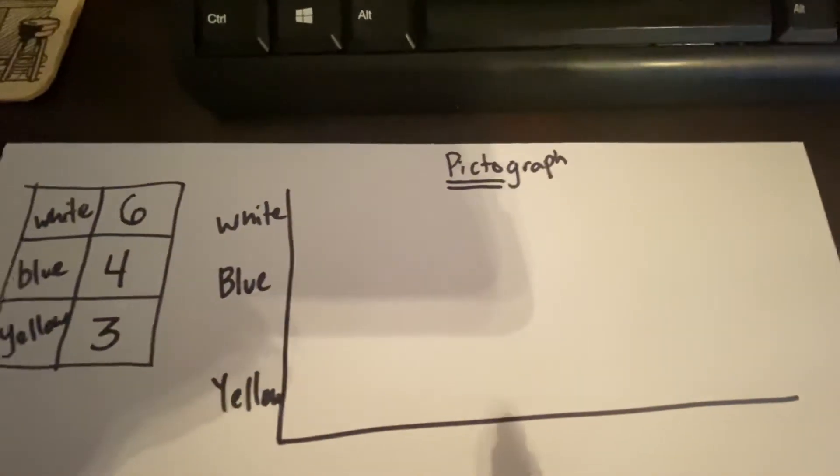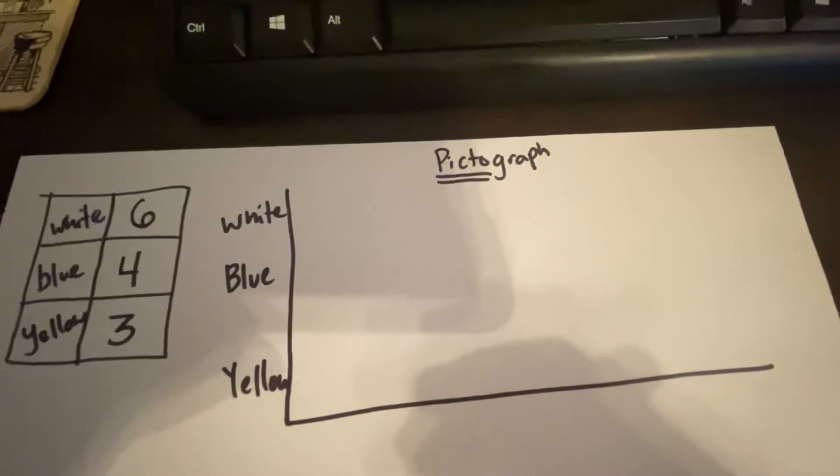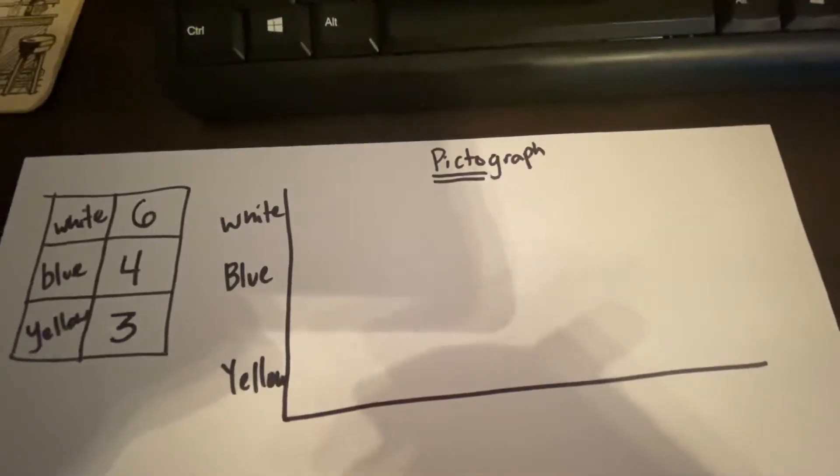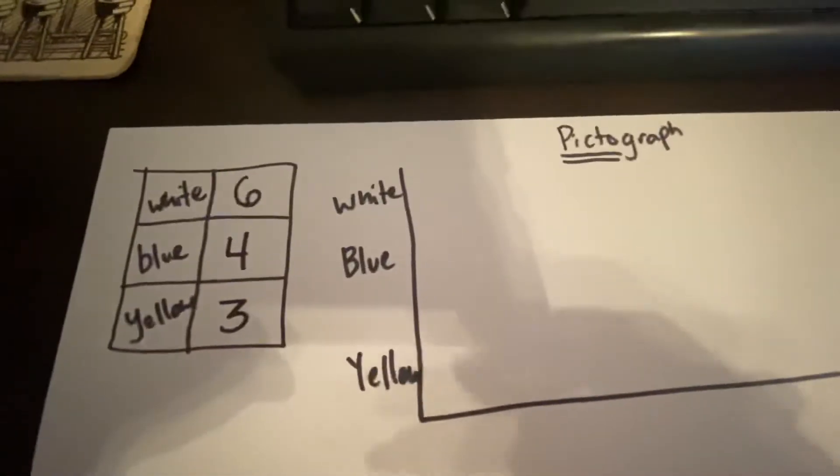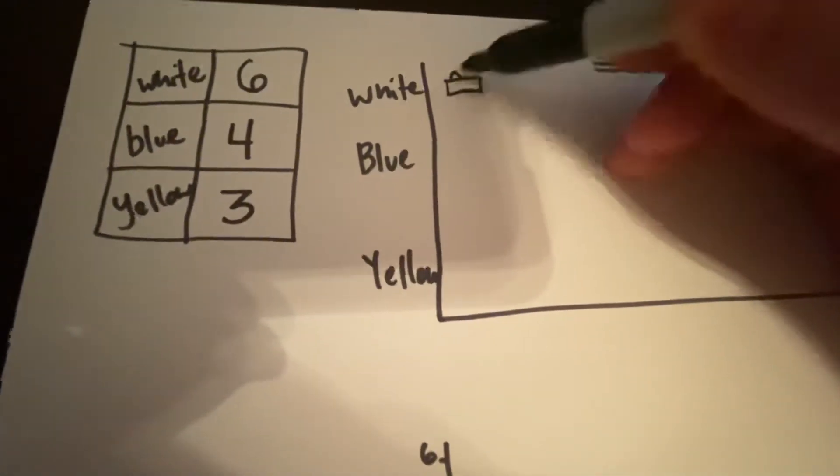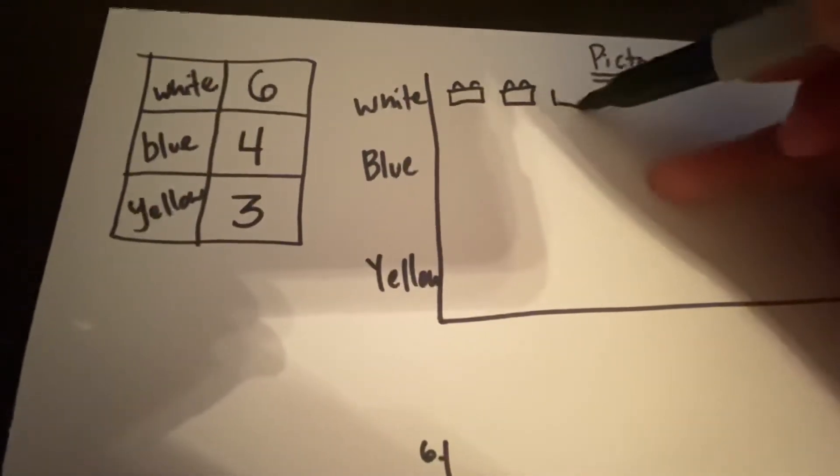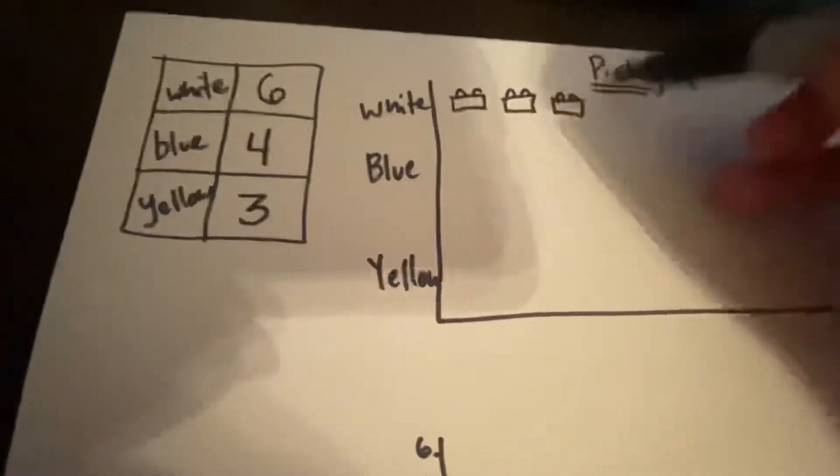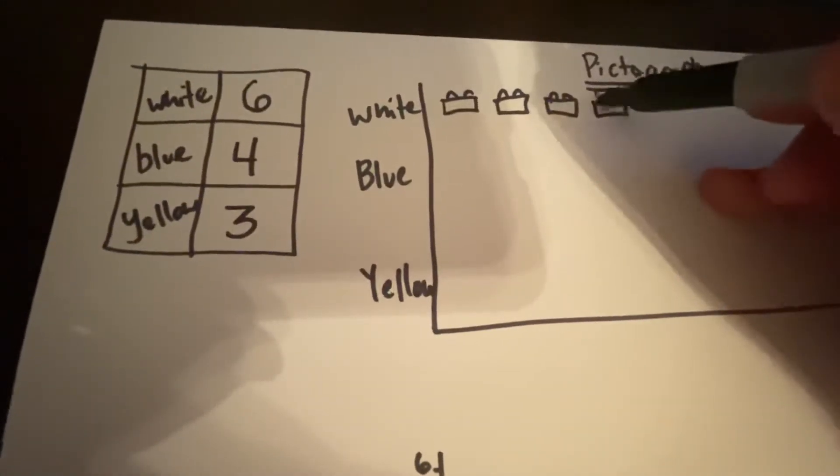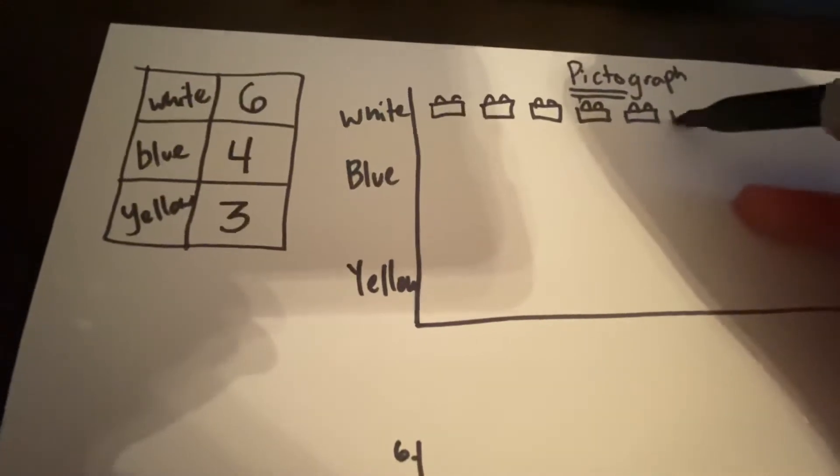So what I would want to do with this is I would want to draw some sort of picture that would remind me what it is that I'm talking about. So in this case, we're working with Legos. So if we look back at our table, I had six white Legos. So I'm going to draw one, two, three, four, five, and six.